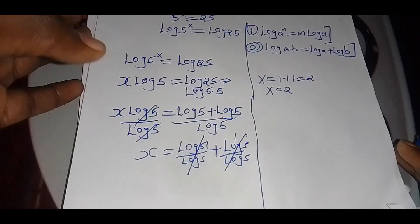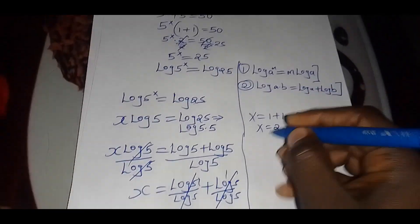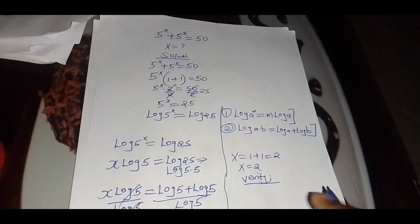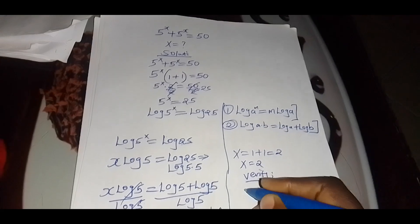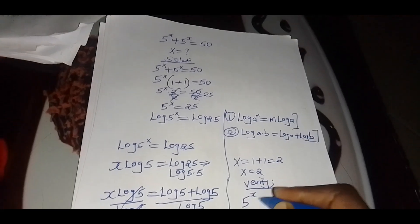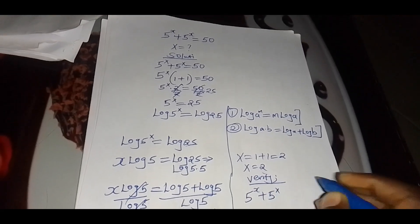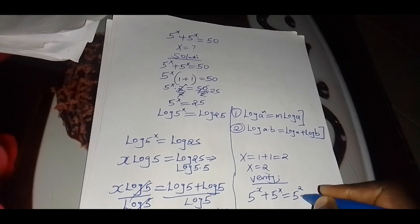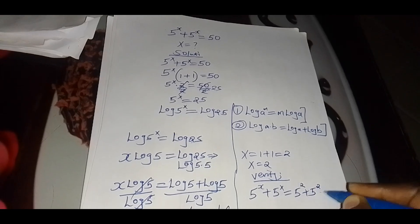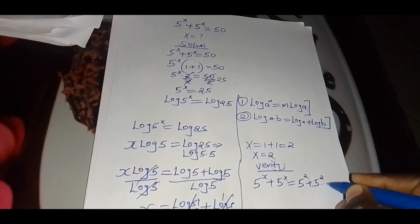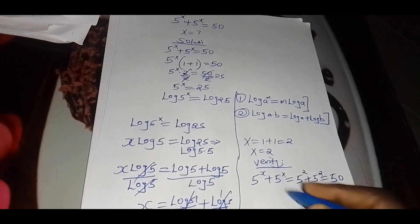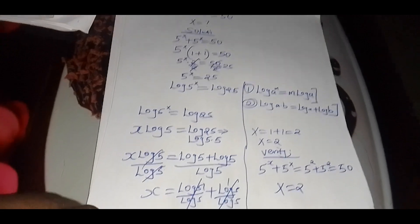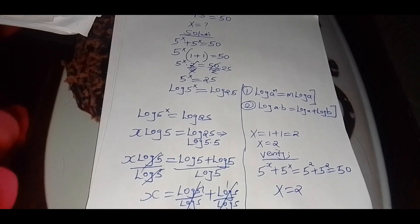Let's verify. We substitute x equals 2: 5 raised to the power 2 plus 5 raised to the power 2 equals 25 plus 25, which gives us 50. This confirms that the value of x is equal to 2. Thank you for watching, and kindly subscribe.